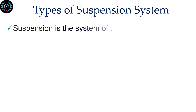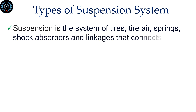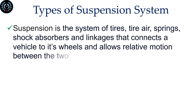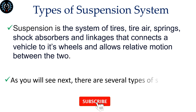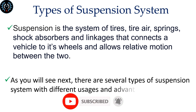Suspension is the system of tires, tire air, springs, shock absorbers, and linkages that connects a vehicle to its wheels and allows relative motion between the two. As you will see next, there are several types of suspension system with different usages and advantages.